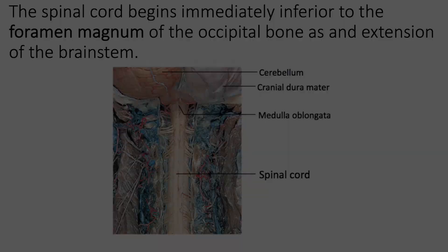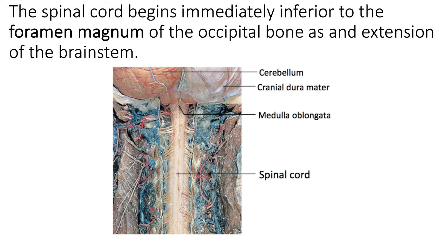The spinal cord begins immediately inferior to the foramen magnum of the occipital bone — that large hole at the base of the occipital bone. It's an extension of the brain, more specifically the brain stem, which is the most inferior portion of the brain.